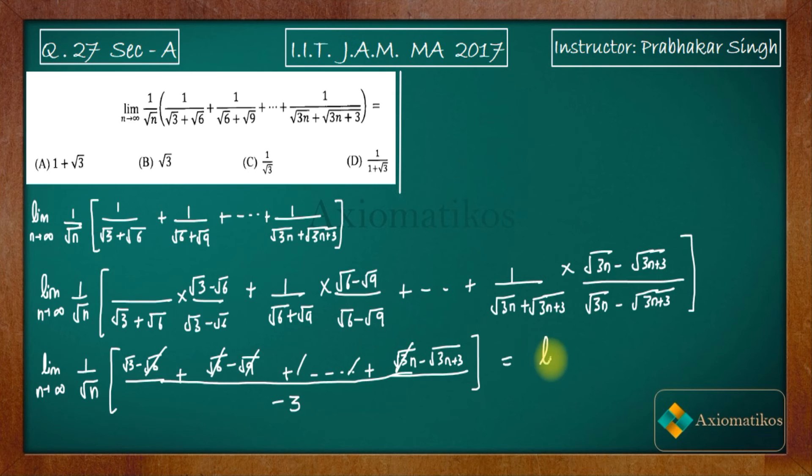That means this will equal limit n goes to infinity. We have minus 1 by 3, and then we have minus times 3n plus 3 by root n. If you take n common outside, you will get root n, and root n will be canceled by this. So the limit, if you evaluate it, you will get it to be 1 by root 3.